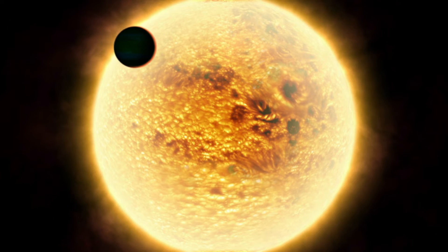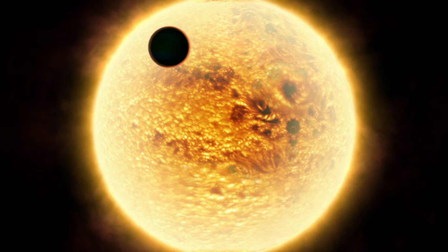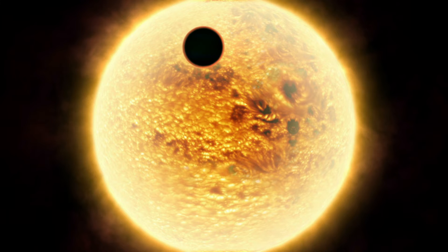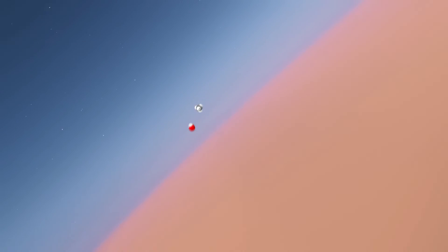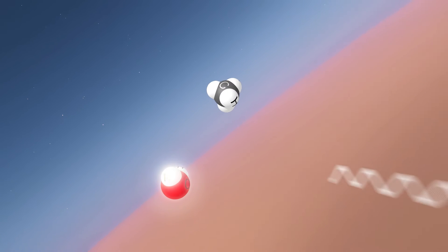The exoplanets are studied as they pass in front of their host star, as seen from Earth, when chemicals in their atmosphere leave their tell-tale signature in the spectra by filtering out certain wavelengths of starlight.